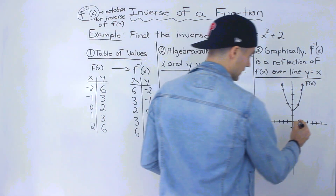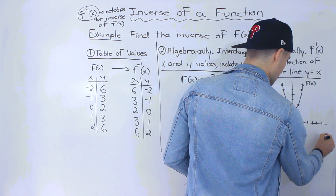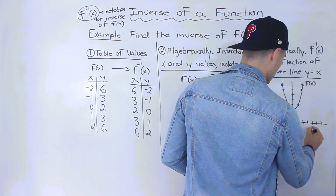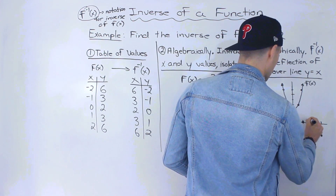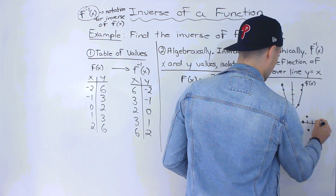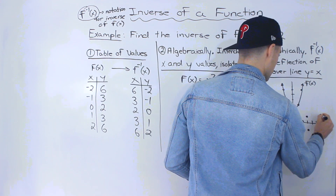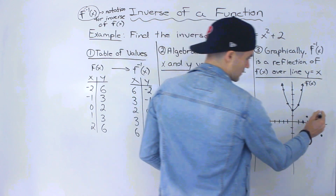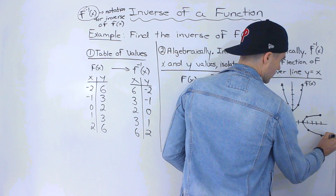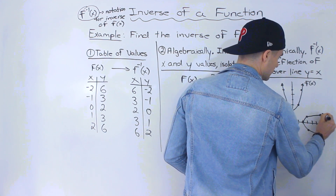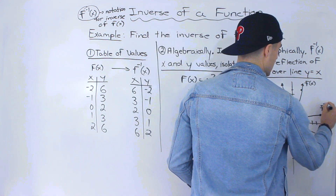As mentioned, it's just a parabola shifted up by two units — this is the function f(x). Now I'm going to graph the inverse using the table of values: six and negative two, three and negative one, two and zero, three and positive one, and six and positive two. If I connect all of these dots, we end up with a sideways parabola, and that is the inverse.